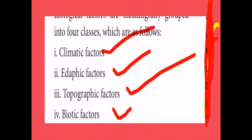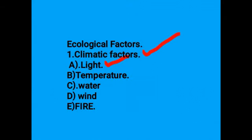In ecology, there are four main factors. They are climatic factors, edaphic factors, topographic factors, and biotic factors. These are the main ecological factors.